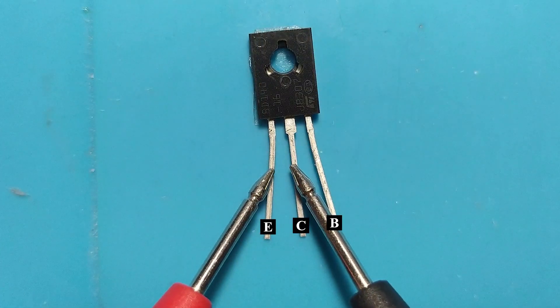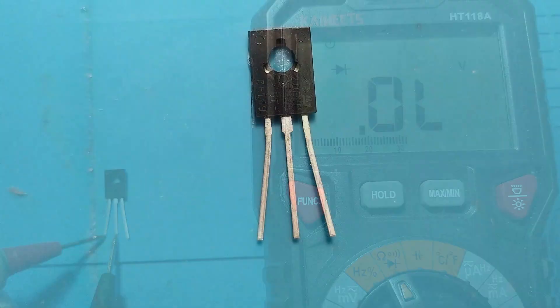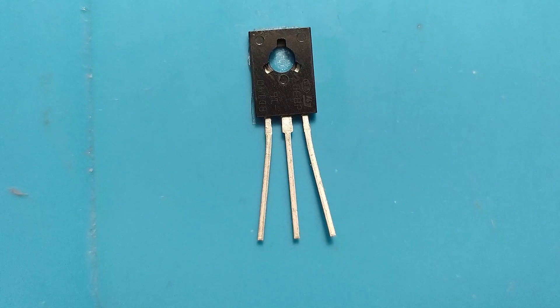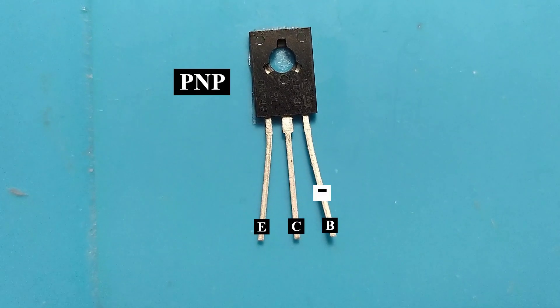Measuring between emitter and collector, we should have no voltage drop, regardless of polarity. From these measurements, we deduce that the BD140 transistor is of the PNP type, with minus on the base.